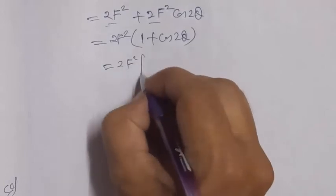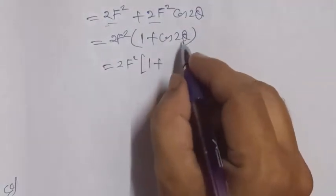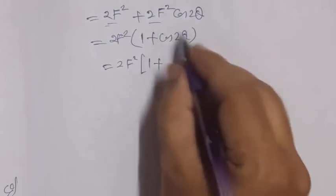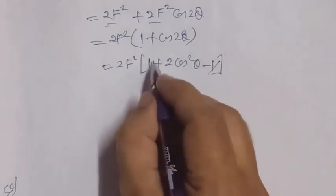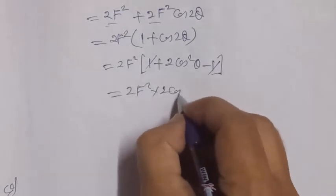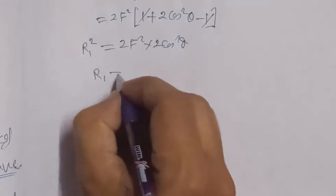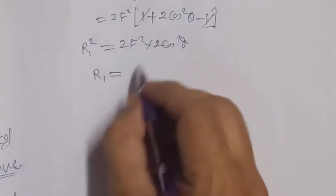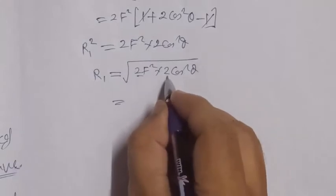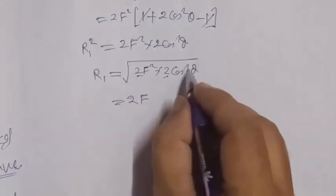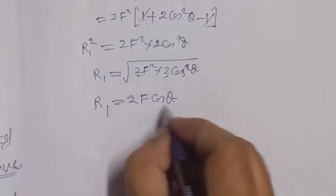Taking the square root we get R1 equals the square root of 2F squared times 2 cos squared theta. The square root of 2 times 2 is 2, the square root of F squared is F, and the square root of cos squared theta is cos theta. So the resultant in the first case equals R1 equals 2F cos theta.